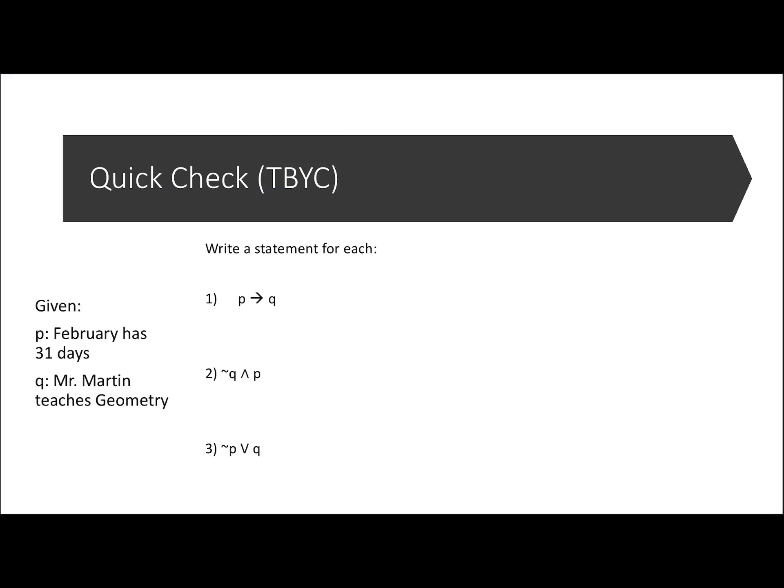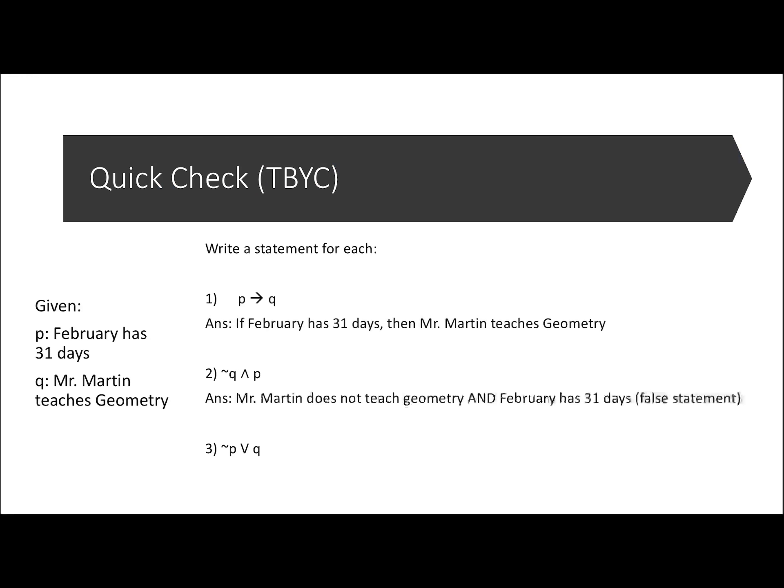Last we have a quick check covering the entire lesson. Write your answers, then restart to check. For number one: 'If February has 31 days, then Mr. Martin teaches geometry.' Next: 'Mr. Martin does not teach geometry and February has 31 days' — that's a false statement. And last: 'February does not have 31 days or Mr. Martin teaches geometry' — that's a true statement. After this you have a three-question quiz on Canvas. Thanks for watching.